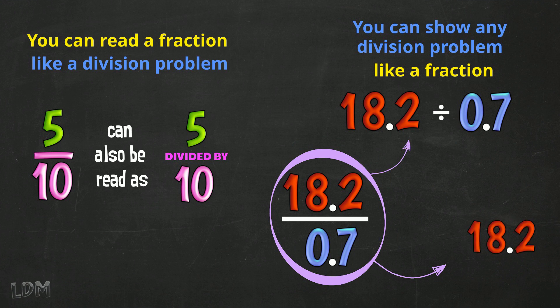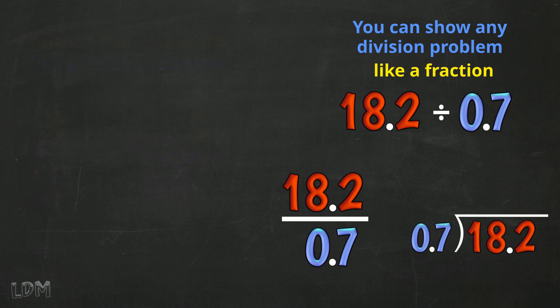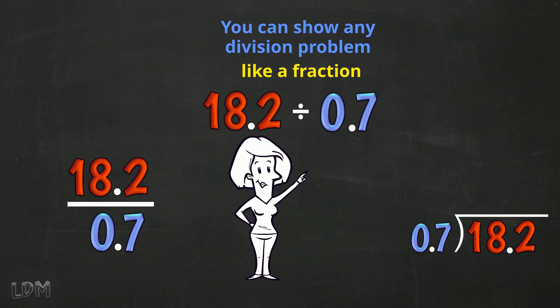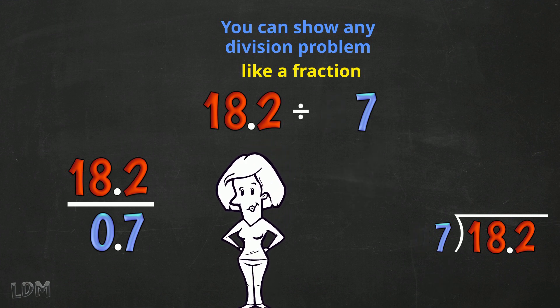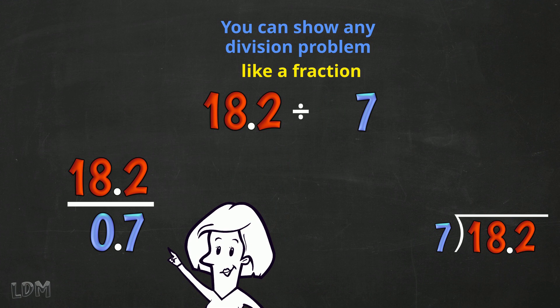This also means 18.2 divided by 0.7. 0.7 is our divisor. You know we want a whole number divisor to solve the problem. And from a fractions perspective, we can't have a decimal here! We need a whole number denominator!